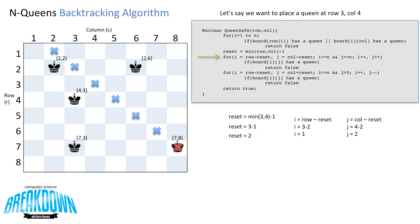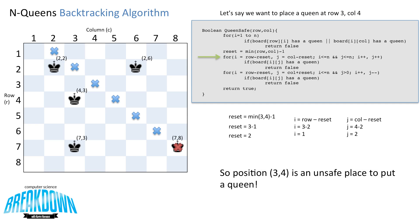There's another for loop in this algorithm that checks the diagonal from the top right to the bottom left. How that works is it just flips some of the values — i starts at row minus reset just like the last loop, but j starts at column plus reset, and it increments the row while decrementing the column, so it travels down the opposite diagonal. Ultimately, this tells us that position 3,4 is unsafe to put a queen.